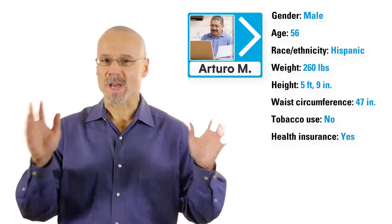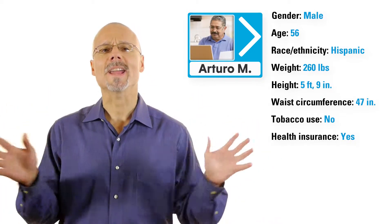First, say hello to Arturo. 56 years old, pretty unhealthy lifestyle. He loves high fat, high calorie food, and hates exercise. That's a bad combination. Arturo is overweight, but he's never had a heart problem.